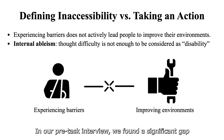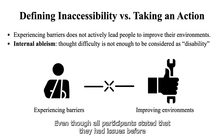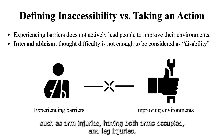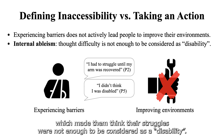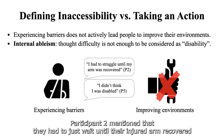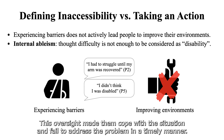In our pre-task interview, we found a significant gap between participant experience with facing barriers and actively adopting solutions. Even though all participants stated that they had issues before, such as arm injuries, having both arms occupied, and leg injuries, we found that they had internal ableism, which made them think their struggles were not enough to be considered as a disability. Participant 2 mentioned that they had to just wait until their injured arm recovered, and participant 5 also mentioned that they didn't think their challenge could be counted as a disability. This oversight made them cope with the situation and failed to address the problem in a timely manner.